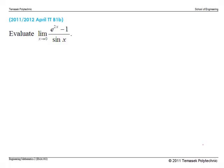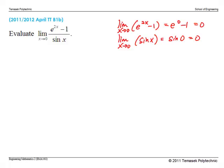Let's look at this past year term test problem. If we consider the limits of the numerator and denominator separately, we get that both limits are 0, giving us the indeterminate form 0/0. This is a condition for L'Hospital's Rule, so therefore we can apply it.